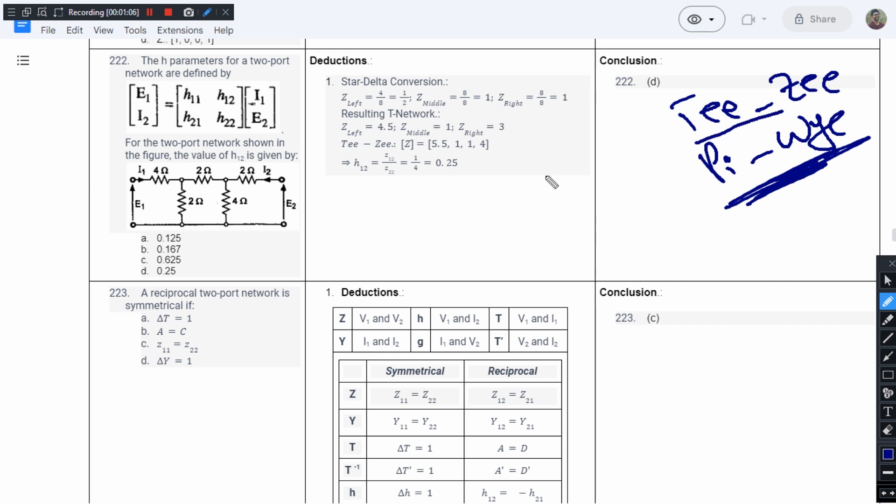So instead, what I want to do is convert this into a T network so that I can analyze the Z parameters. From Z parameters, I can convert to H parameters in order to find the value that is being asked. So let's do the star-delta transformation.